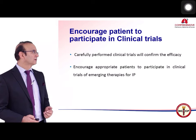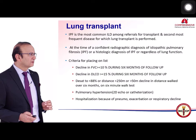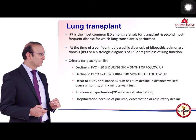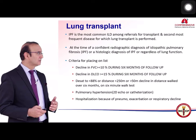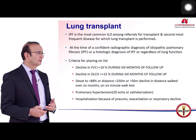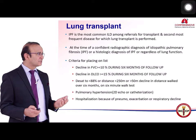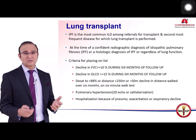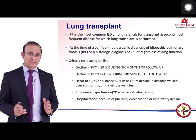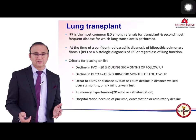IPF is the most common ILD among referrals for lung transplant and the second most frequent disease for which lung transplant is performed. Indications to place patients on the transplant list include FVC decline greater than 10 percent in 6 months, DLCO decline greater than 15 percent in 6 months, desaturation to 88 percent on walk test, pulmonary hypertension on echo, and recurrent hospitalizations for pneumonia or respiratory failure.